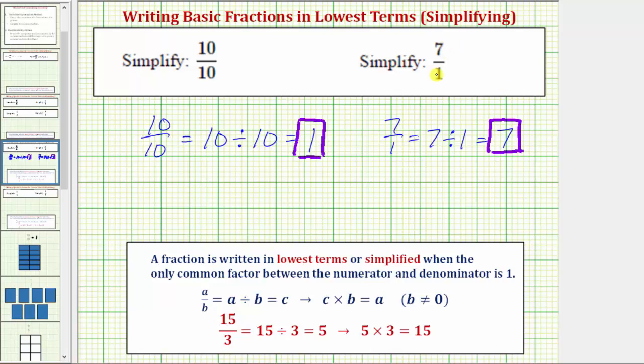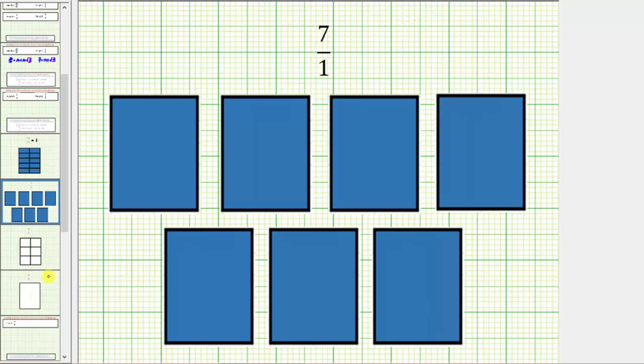Thinking about this conceptually, seven ones means we have seven one-wholes. If we define this rectangle as one whole, we would not cut or partition it because the denominator is one. Because the numerator is seven, we want seven of these one-wholes, which gives us seven.